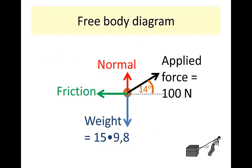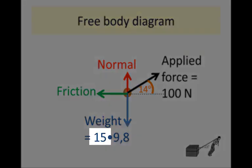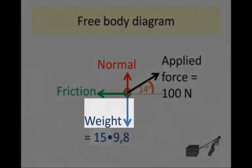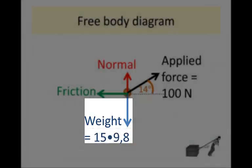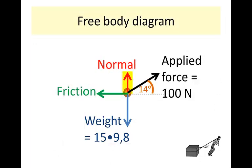The first thing we do is draw a free body diagram for this situation. The mass of the block is 15 kilograms. The earth exerts a downward force called weight, with magnitude 15 × 9.8. We show the weight vector downward and label it as 15 times 9.8. The surface exerts a perpendicular normal force on the block. Since the surface is horizontal, the normal force acts straight up, but its magnitude is not the same as weight.